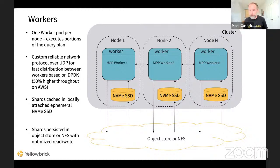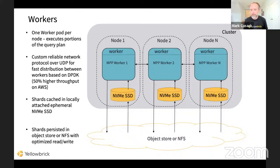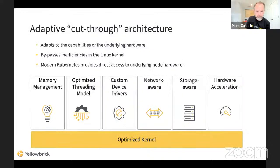All of the Yellowbrick table data is stored in object store. As we ingest data, it goes through each worker in parallel and gets pushed and persisted straight to S3. When a query comes in, we pull data out of S3, hydrating the local NVMe caches on each of those worker nodes. Subsequently, if other queries reference the same data and the same tables, data will be pulled out of the local NVMe drive for performance reasons.